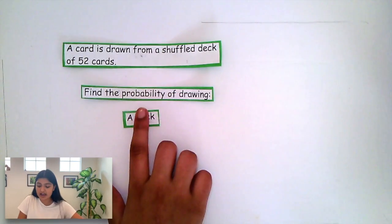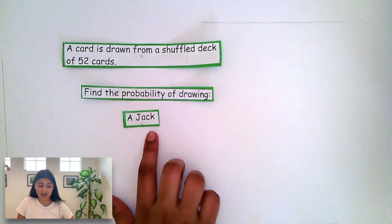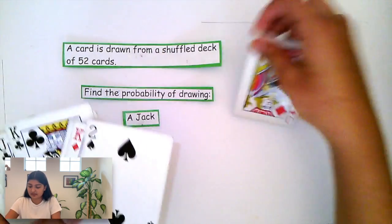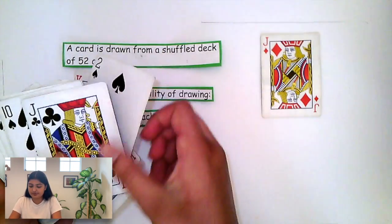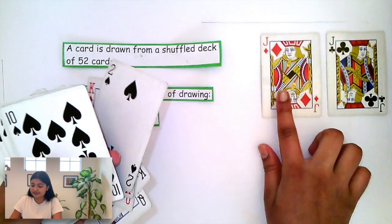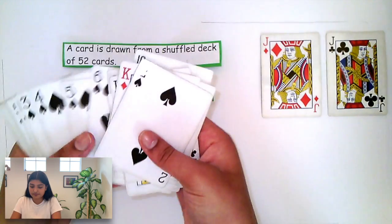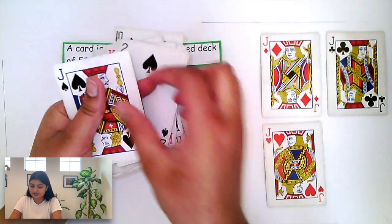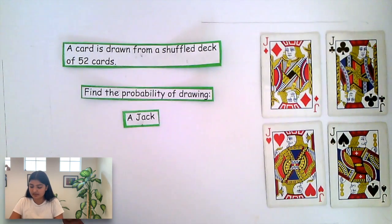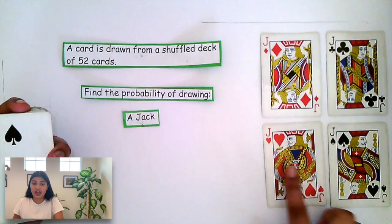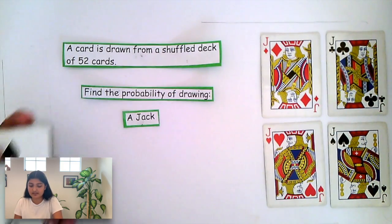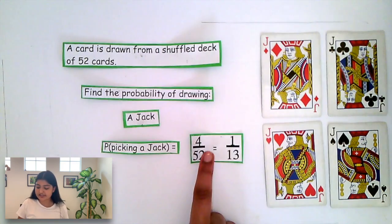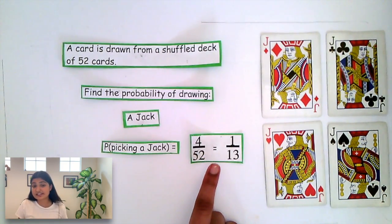Let's take another example. Find the probability of drawing a Jack. As we can see, there will be a single Jack from each suit — there's a Jack from a diamond, a club, a heart, and a spade. So there are 4 Jacks out of a total of 52 cards. So we know that the probability of picking a Jack is 4 over 52, which can be simplified to 1 over 13.